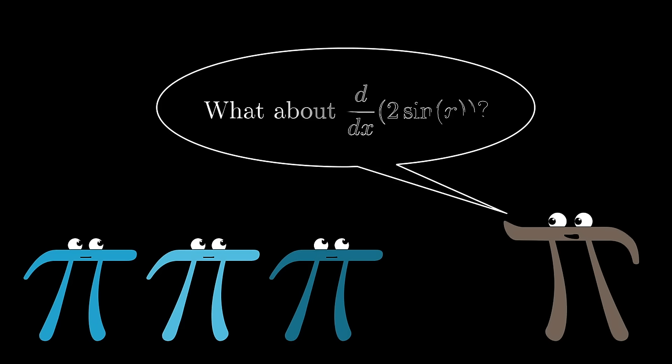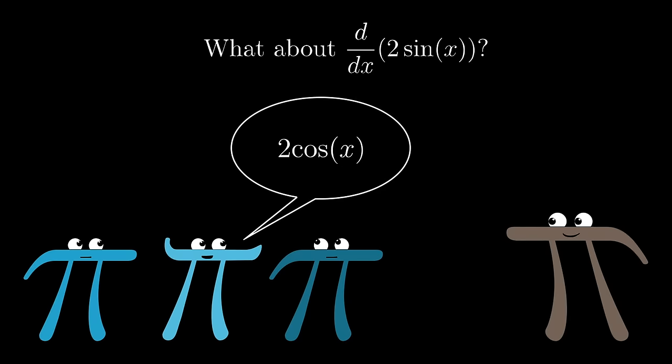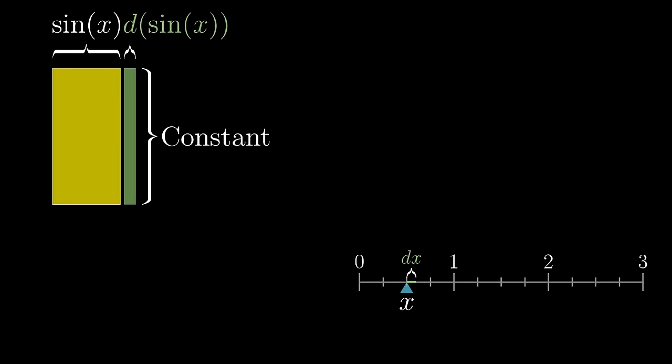By the way, I should mention that if you multiply by a constant, say 2 times sine of x, things end up a lot simpler. The derivative is just the same as the constant multiplied by the derivative of the function, in this case 2 times cosine of x. I'll leave it to you to pause and ponder and just kind of verify that that makes sense.